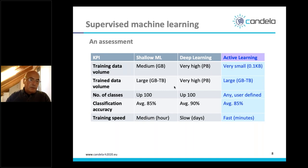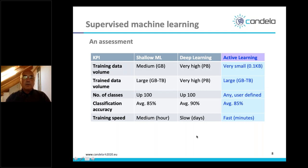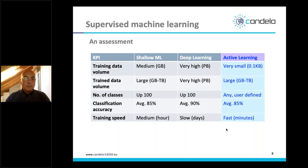Training speed is the last comparison criterion. For shallow machine learning it is hours or less. Deep learning depends on resources, but even on high-performance computing facilities, training can take days to generate the model. Active learning is very fast — seconds to minutes, essentially real-time at the speed of user reaction. The user clicks the mouse on the image, gets a response, clicks again indicating positive or negative examples, and the answer comes back immediately. This speed is very important because it allows exploration of large data volumes in a very flexible way, discovering new information and knowledge.